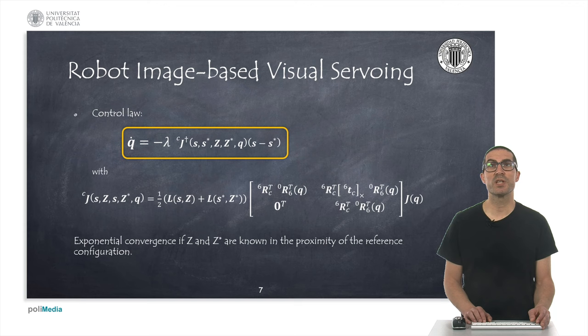Once the relationships between the joint velocities of the robot and the observed velocities of the points in the image are known, we establish a proportional controller that corrects the error between the observed and reference characteristics. We must compute the pseudo-inverse of the corresponding Jacobian matrix and apply the expression highlighted in orange, where lambda is the gain of the controller. The convergence will be exponential if the depths are known in the vicinity of the final configuration and in the absence of noise, disturbances, or non-modeled dynamics—that is, in an ideal world.